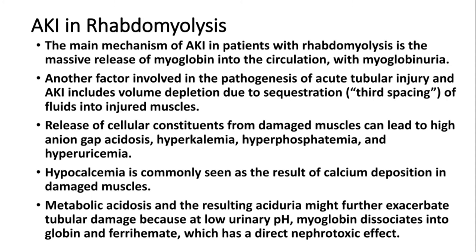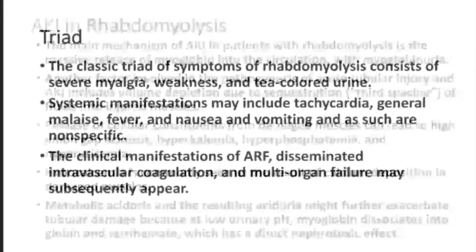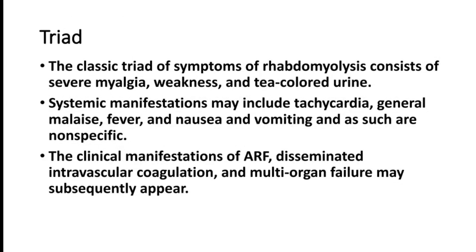At low urinary pH, myoglobin dissociates into globulin and ferrihematate, which has a direct nephrotoxic effect. The three classical clinical findings of rhabdomyolysis are: severe myalgia due to muscle inflammation, severe proximal muscle weakness, and tea-colored or red urine due to myoglobinuria.